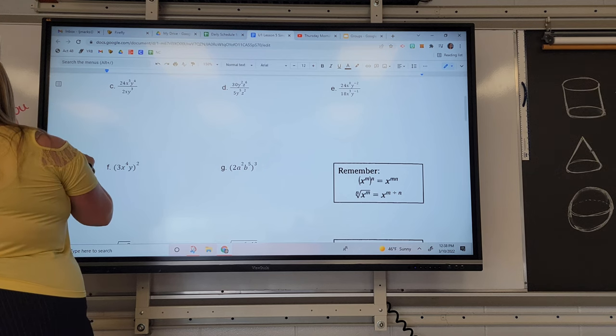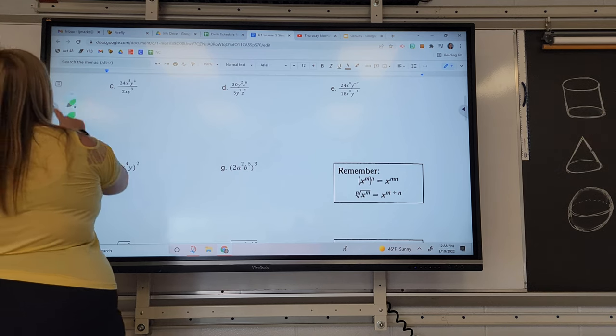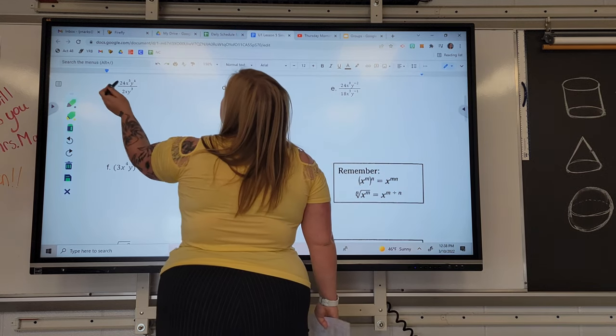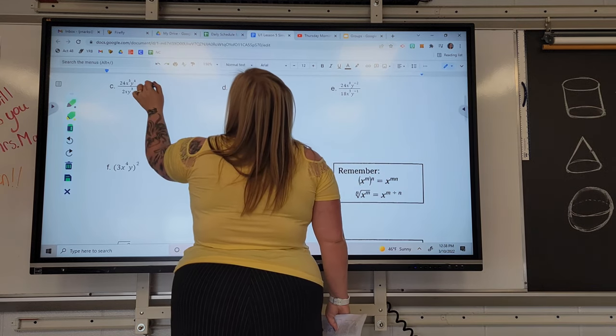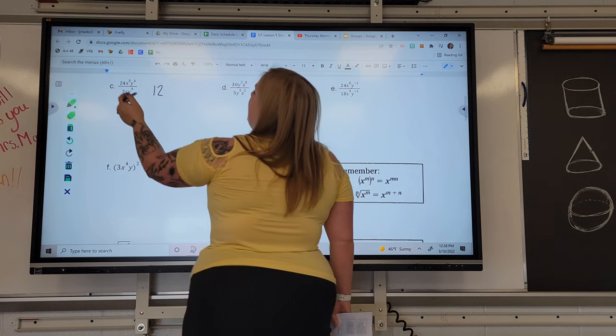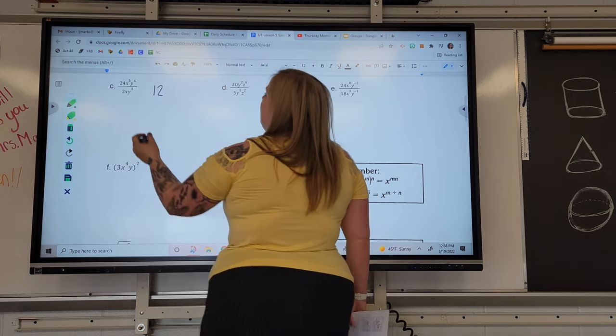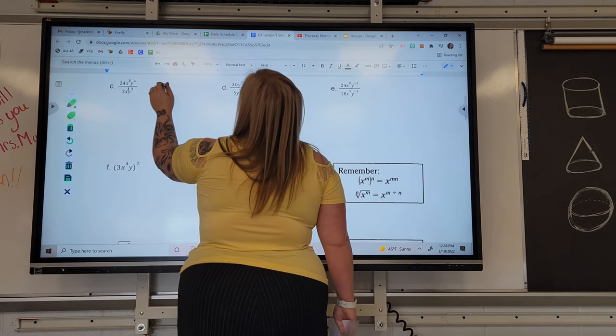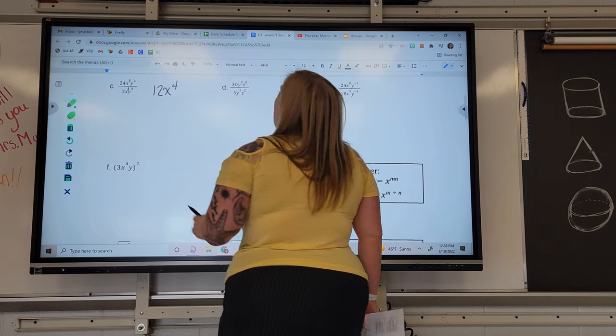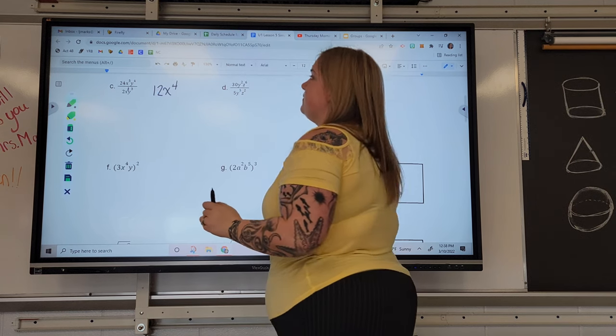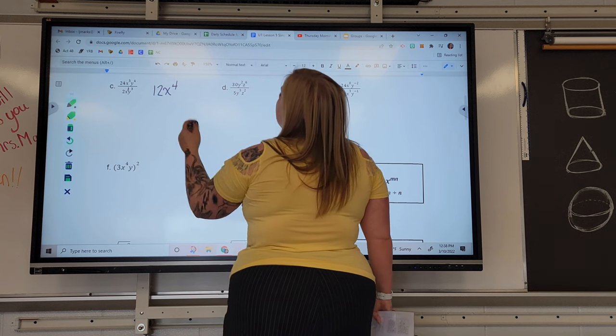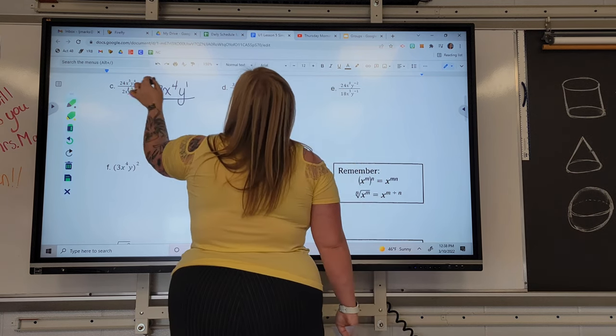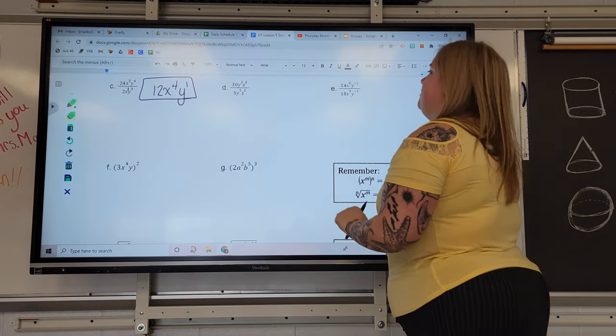So for these, we know that fractions aren't scary. Fractions are really just division. For C, we have 24 divided by 2 is 12. If I have five X's on top and one X on bottom, that will make one of the X's cancel, four of them remain, and those extras are on the top. Y's, there's four on top and three on bottom. Three would cancel, and one would be left on the top.